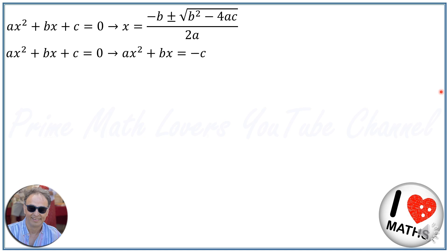Then dividing both sides by a, we get x squared plus b over a times x is equal to negative c over a. To complete the square on the left hand side, I add b squared over 4a squared to both sides of the equation.